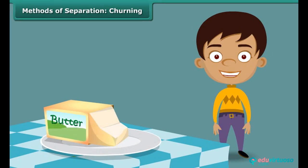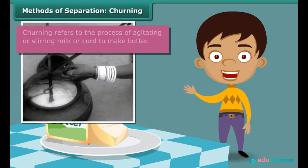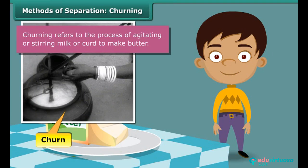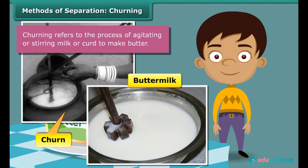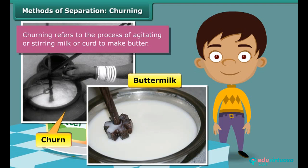This is butter. Do you know how butter is made? When milk is stirred vigorously in a churn, butter is obtained. The liquid left behind is the tasty, nutritive buttermilk that is relished by many as a refreshing summer drink. Two useful components emerge from a mixture when this method of separation is employed.